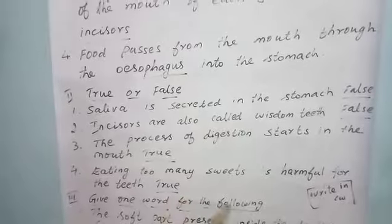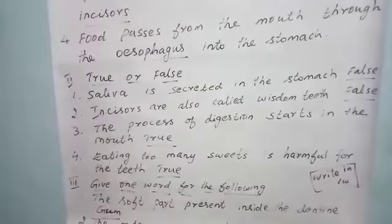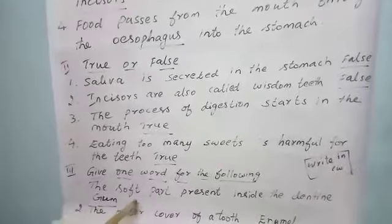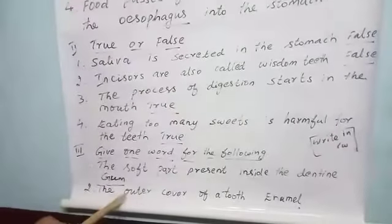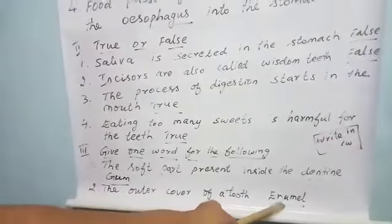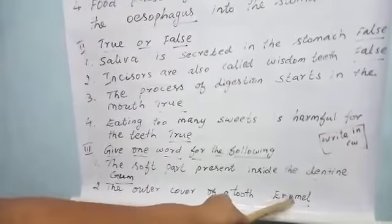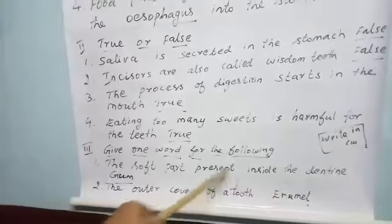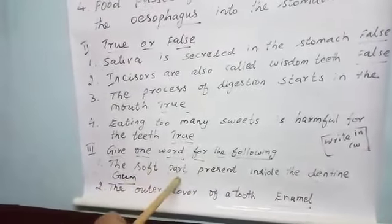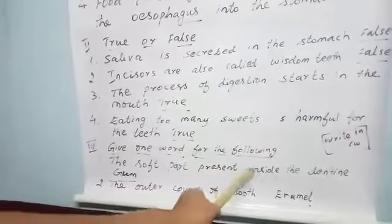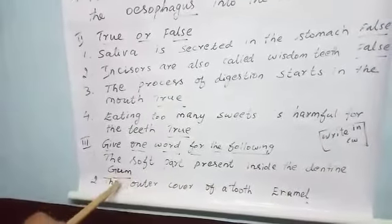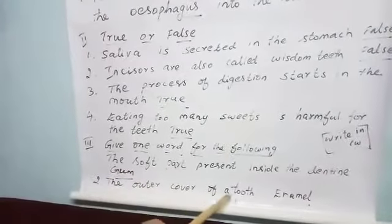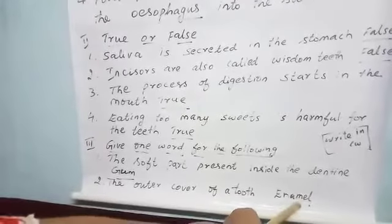Give one word for the following. The soft part present inside the dentine is known as gum — G-U-M, gum. The outer cover of the tooth is known as enamel — E-N-A-M-E-L, enamel.